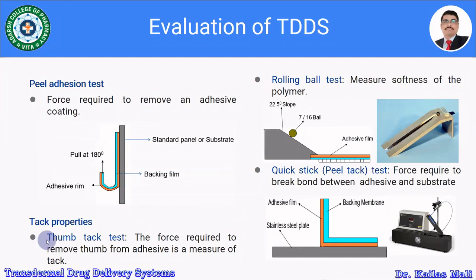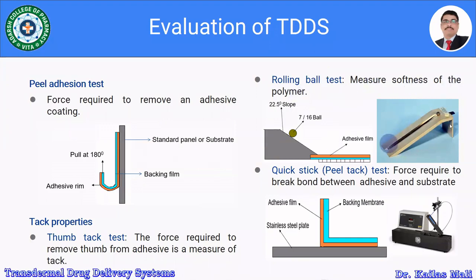In the thumb tack test, the force required to remove the thumb from the adhesive is a measure of tack. In the rolling ball test, the softness of the polymer is measured. The apparatus has a slope at an angle of 22.5 degrees; a 7/16-inch ball rolls down the slope onto the backing layer and adhesive film.